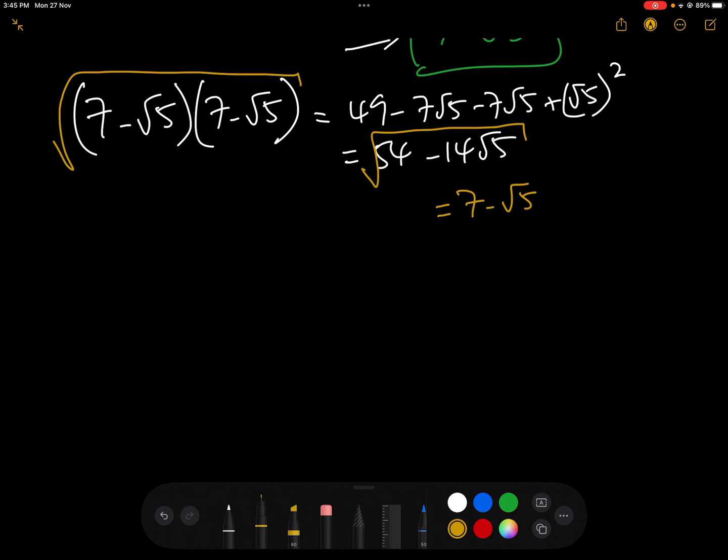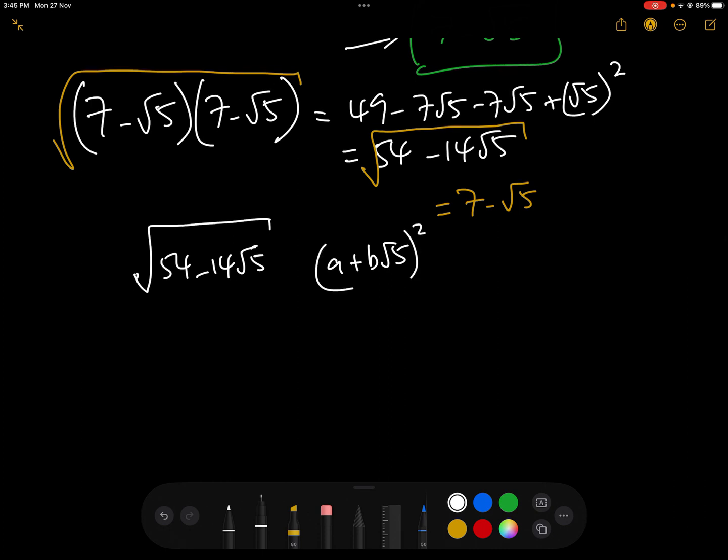Okay, why does it work? All right, well, let's just have a look again. So we've got the square root of 54 minus 14 root 5. Okay, and we need to simplify that. And we're going to put it in the form a plus b root 5 squared, so that we can take the square root. Expanding out of this bracket, we get a squared add 2ab root 5, add root 5 squared.